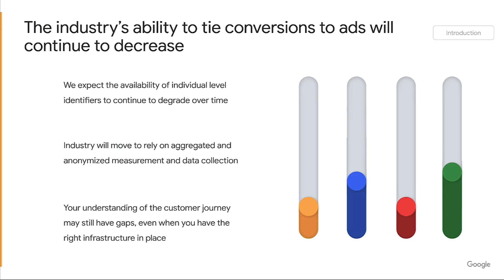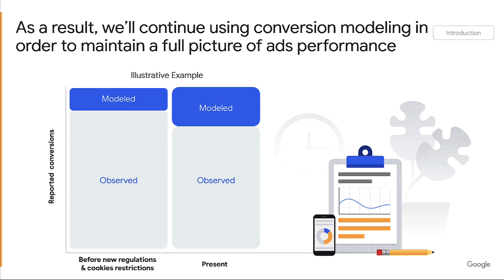Even with all the right infrastructure in place, there are still gaps that no one will be able to fill. The data we report in your conversions column is a combination of observable data and model data. Before most of these new regulations and changes were in place, browsers began to restrict third-party cookies, and the industry was able to provide almost all observed data. The new industry and browser changes have caused a shift towards more modeled data, and the composition of reported modeled conversions will continue to grow. Please note this is an illustrative example and does not reflect the exact breakout of modeled and observed data in a given account.